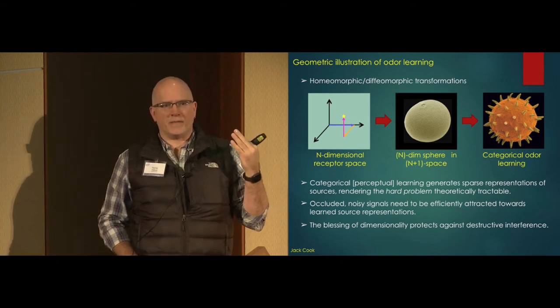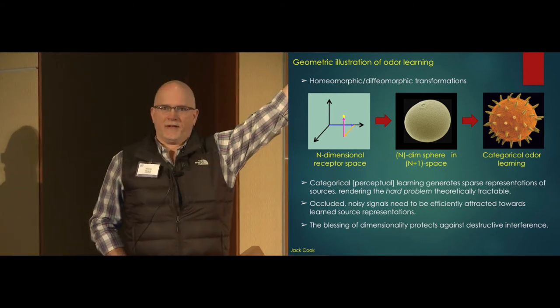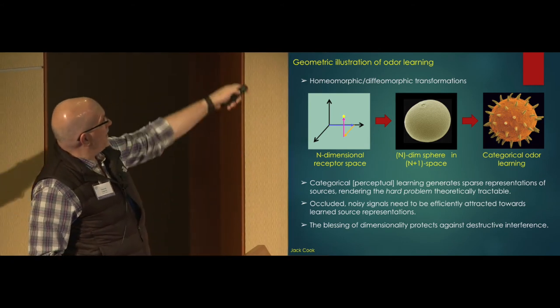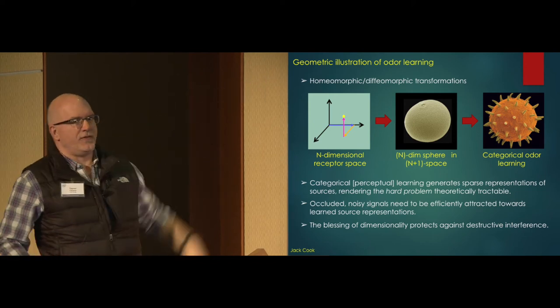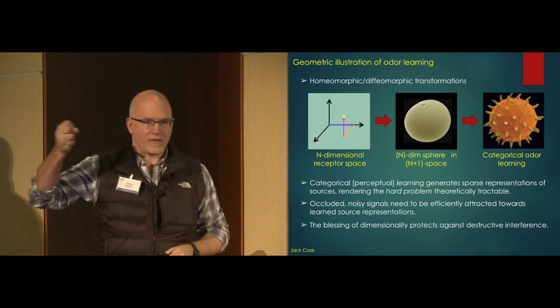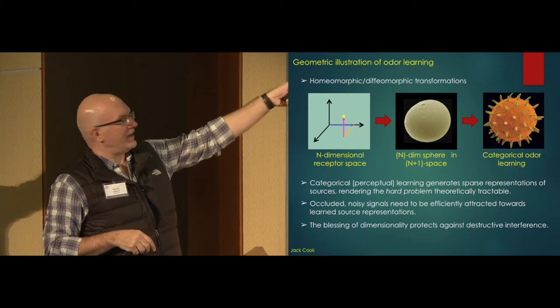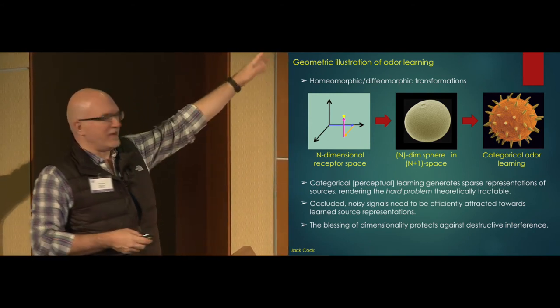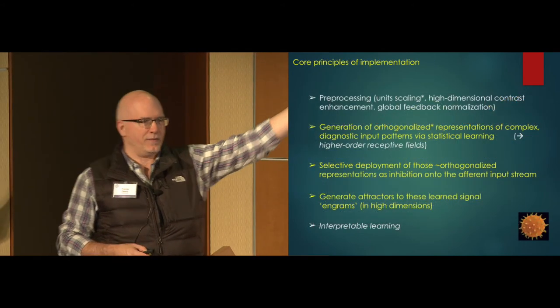And olfactory odor learning can be presented by this goldenrod pollen in which you've learned. Each one of those peaks is a learned representation. For present purposes, I just want to use it to illustrate the point that the task has gone from being an impossible forward problem to a tractable Bayesian problem. Given the evidence, which of these solutions is most likely from a discrete number of solutions? And so what we've done here is to, this essentially becomes sparse. Any sort of occluded noisy signals, even quite noisy signals, can be efficiently attracted towards an odor engram. And, of course, in high-dimensional space, there's a lot less capacity for ambiguity. The blessing of dimensionality protects against destructive interference.